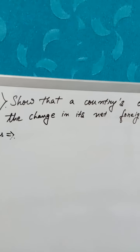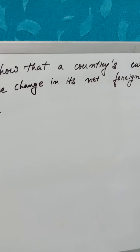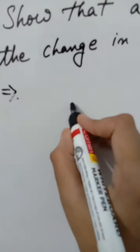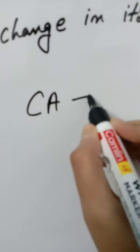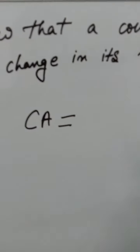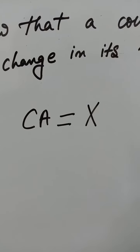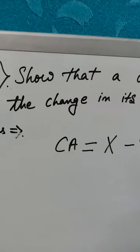The first question: show that a country's current account balance equals the change in its net foreign wealth. So first, what is the current account of a country? The current account of a country is the difference between exports and imports. CA equals exports minus imports — we all know that.